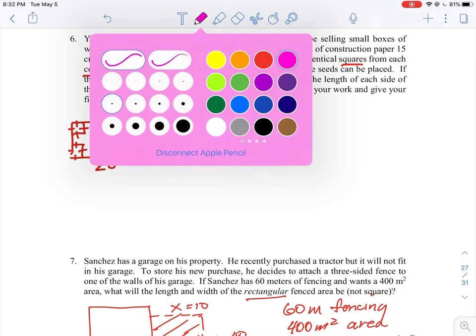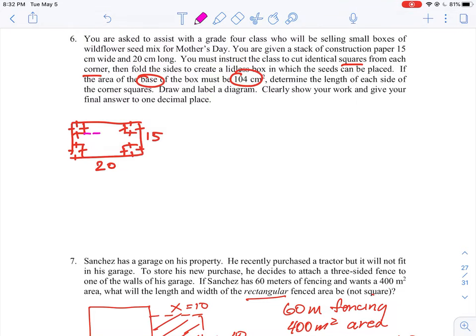Okay so I'll just put that in a separate color here. We have a base which is going to be the leftover piece when you cut those corners out and you presumably fold up the sides. Taking out the corner will allow you to fold up the walls right and this is going to be 104 as the area.